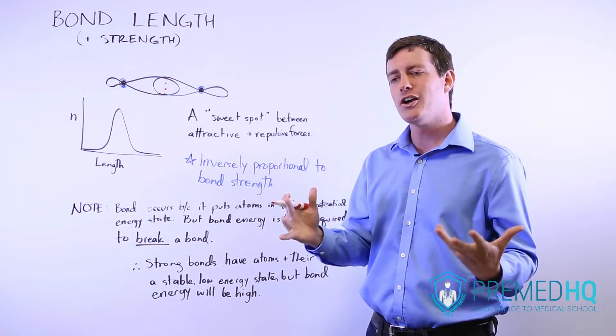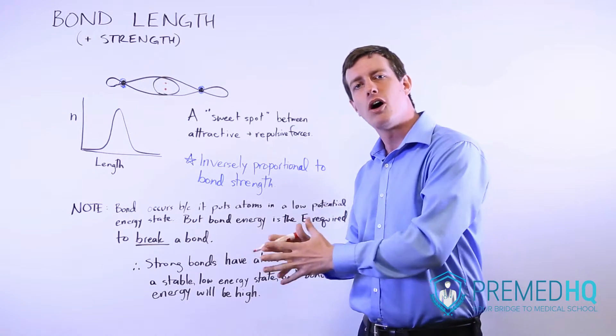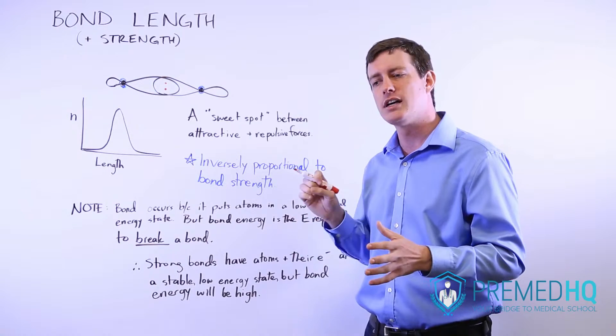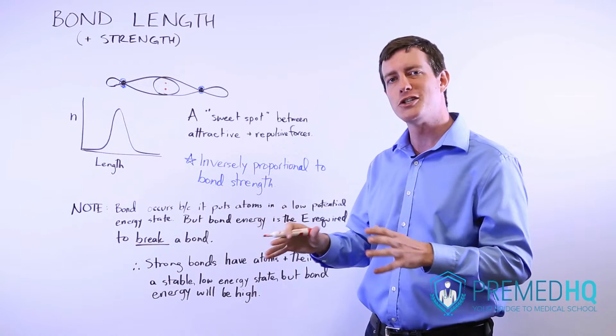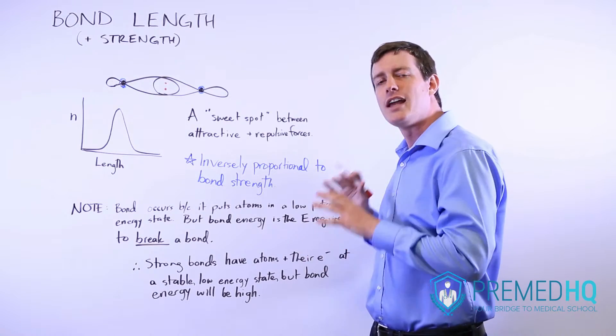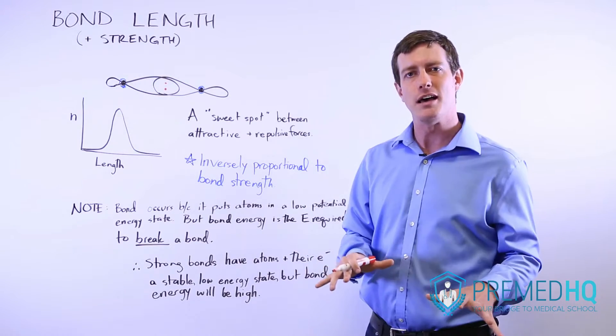Bond energy for a very strong bond will be high. The reason for that is because it takes a lot of energy to break a strong bond. That's what bond energy stands for, the energy that you need to break that bond. You can also think of it as bond dissociation energy.